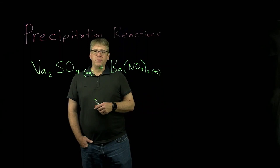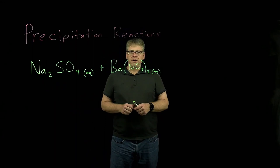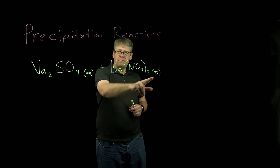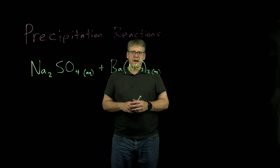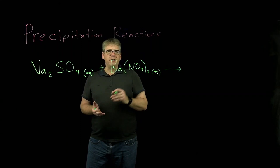Here's an example of a potential precipitation reaction right here. We have sodium sulfate and barium nitrate. Both of these are water soluble materials and I've indicated that by labeling each as aqueous. So will this make a successful precipitation reaction? We need to predict what products could be made by mixing these two electrolytes, by seeing what type of cation and anion is present in each reactant.